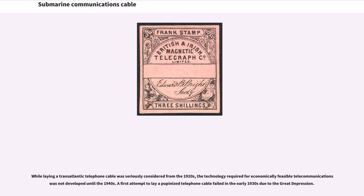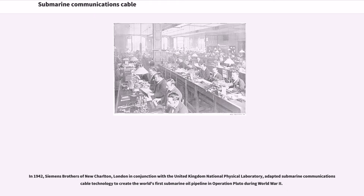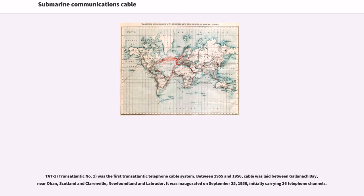While laying a transatlantic telephone cable was seriously considered from the 1920s, the technology required for economically feasible telecommunications was not developed until the 1940s. A first attempt to lay a telephone cable failed in the early 1930s due to the Great Depression. TAT-1 was the first transatlantic telephone cable system. Between 1955 and 1956, cable was laid between Gallanagh Bay, Oban, Scotland, and Clarenville, Newfoundland and Labrador. It was inaugurated on September 25, 1956, initially carrying 36 telephone channels.